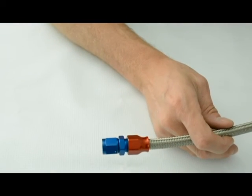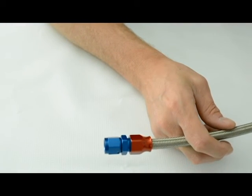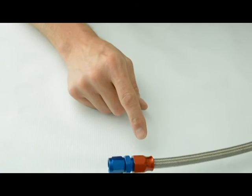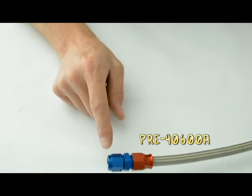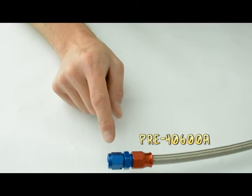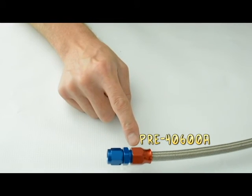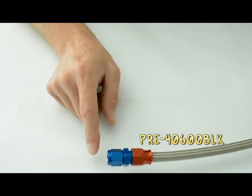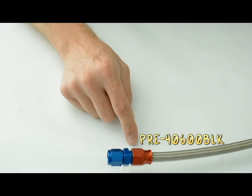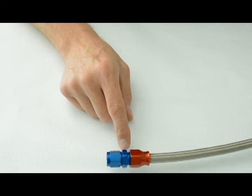And then we do offer them in aluminum as well. So if you want a red and blue look or a black aluminum, we have those. It's the same part number, it's a PRE-40600. You just put an A after it for aluminum and that would be blue and red. And then you put BLK behind it for black. So it would be 40600 BLK for the black fitting.